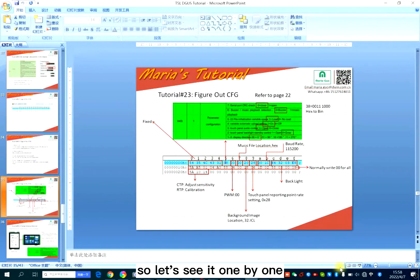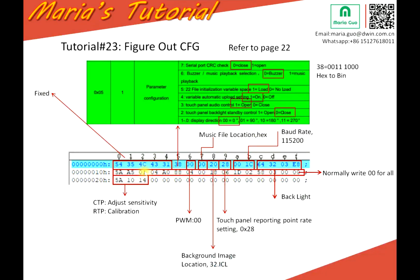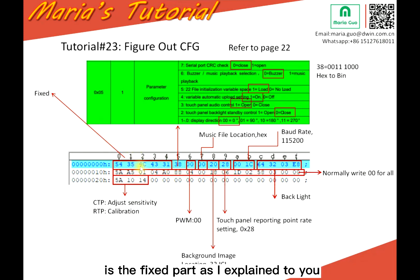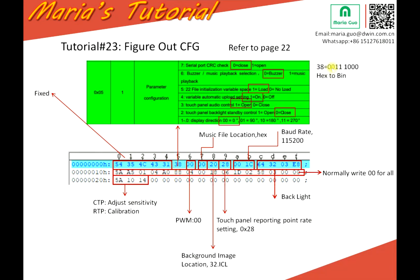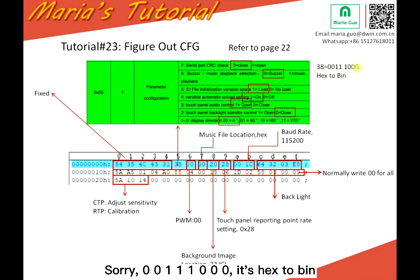Let's go through it one by one. Here: 5, 4, 35, 4, C, 4, 3, 3, 1 — this is the fixed part, as I explained just a moment ago. And here is the most important part: 38. So 38 means in binary, 00111000, which is hex 38.